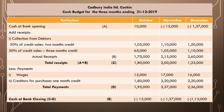From total receipts of 1,80,000, we deduct total payments of 1,95,000 — giving a closing balance that is an overdraft of rupees 15,000. This means cash was insufficient, so we show an overdraft of 15,000, which is carried forward as the opening balance for November.